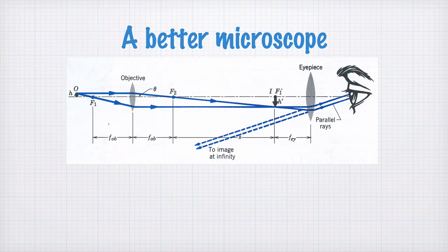Here is a strategy to build a better microscope. This is the beginning of a more complex optical design, and we call this a compound microscope, because it has more than one lens in it.